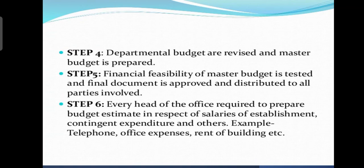All departments have budgets prepared and a master budget is formed. Then the financial feasibility of the master budget is tested, and the final document is approved and distributed to all parties involved. Lastly, every head of office is required to prepare budget estimates in respect of salaries, establishment contingent expenditures, and others — for example, telephone expenses, office expenses, and rent of buildings. Each head must make budget estimates regarding salaries, fees, and contingent or unforeseen expenditures.